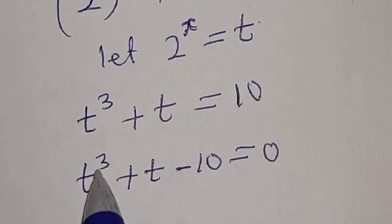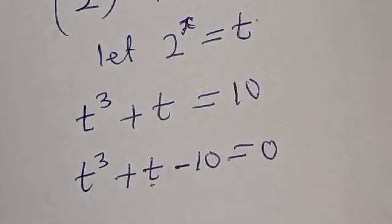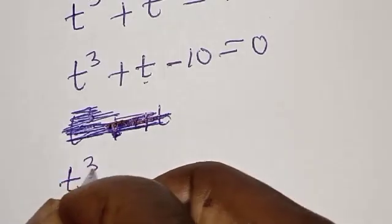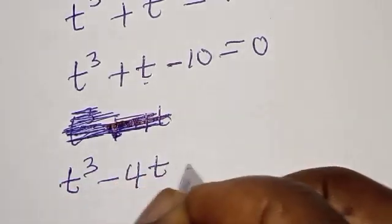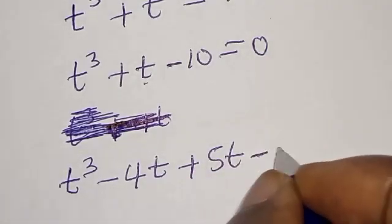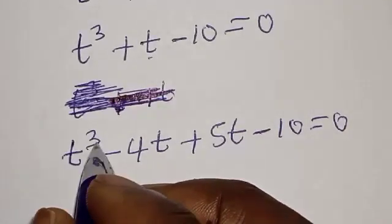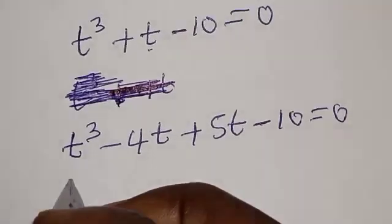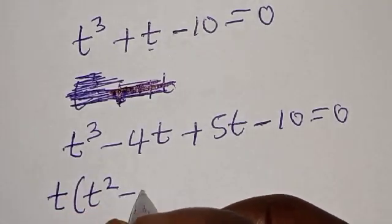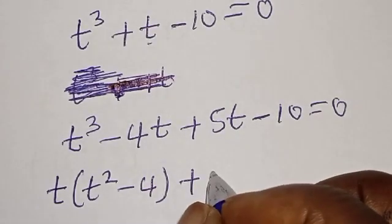Now we have t raised to power 3x plus t minus 10 is equal to 0. We can split this: t raised to power 3x plus 4x. Then let's factor t out — we have t into t squared minus 4, plus 5t minus 10.